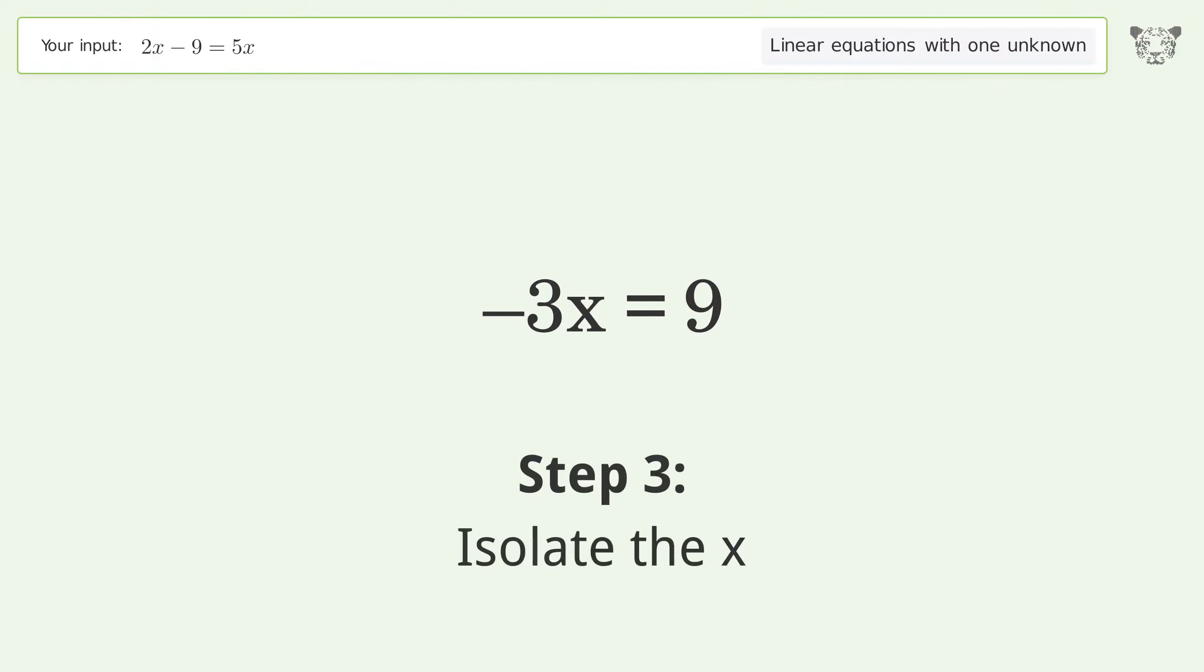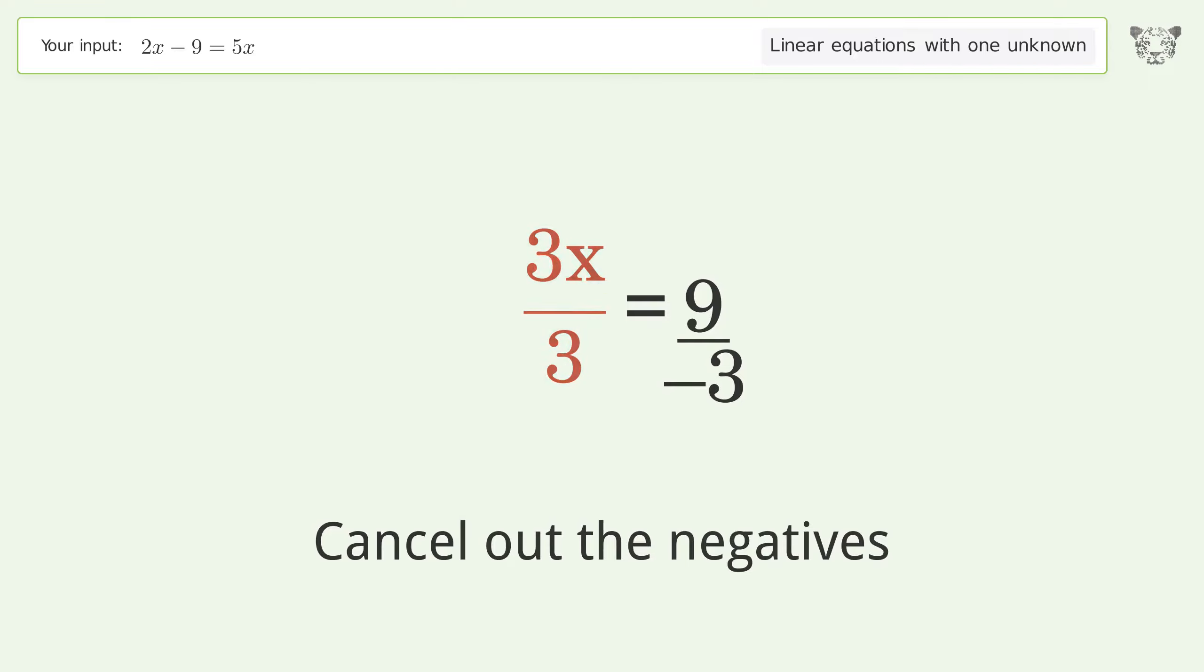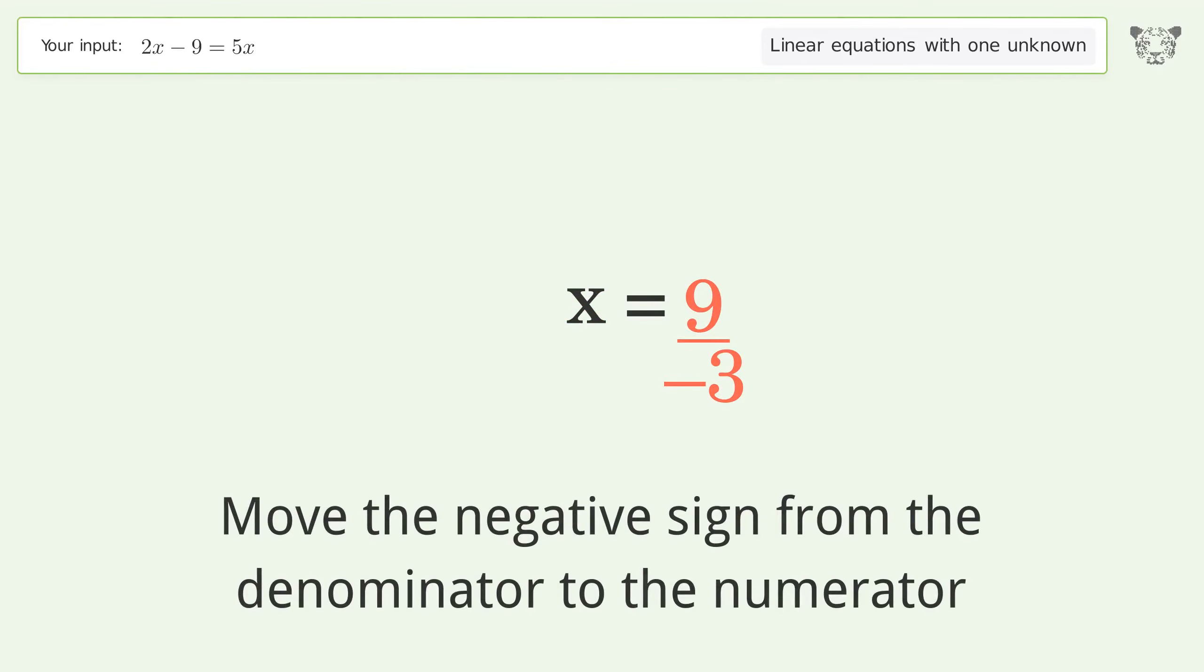Isolate the x. Divide both sides by negative 3. Cancel out the negatives. Simplify the fraction. Move the negative sign from the denominator to the numerator.